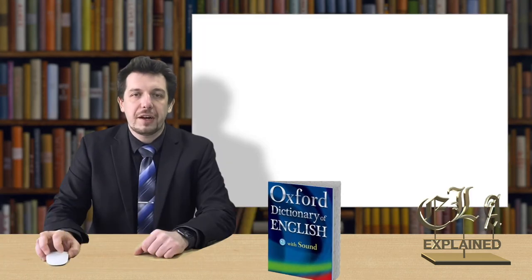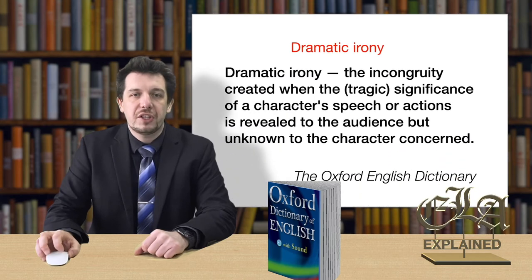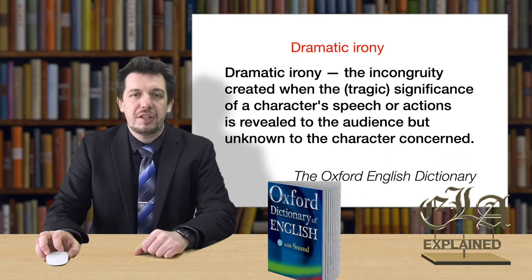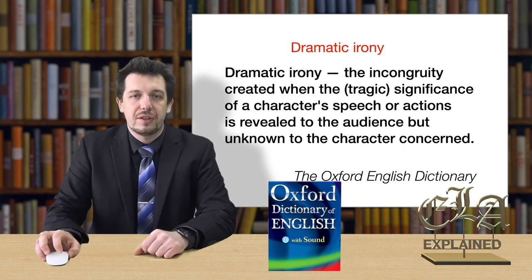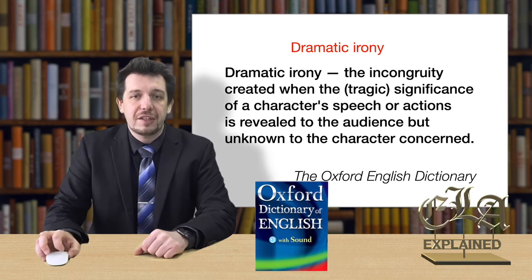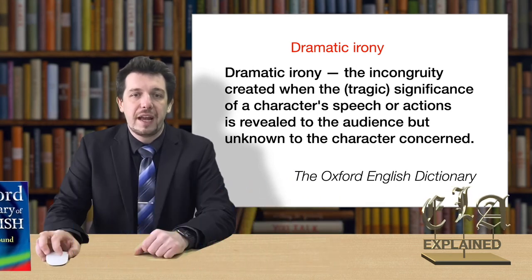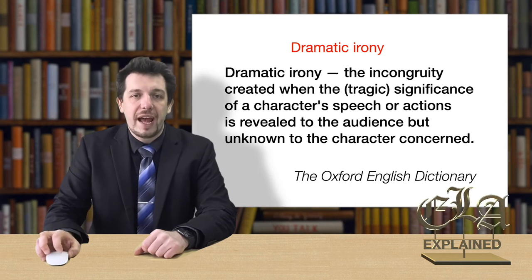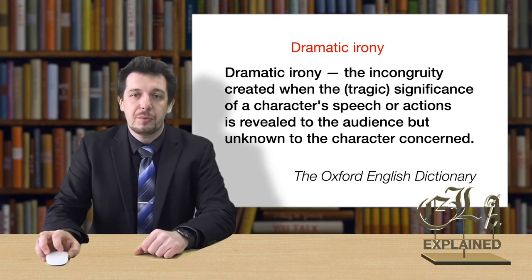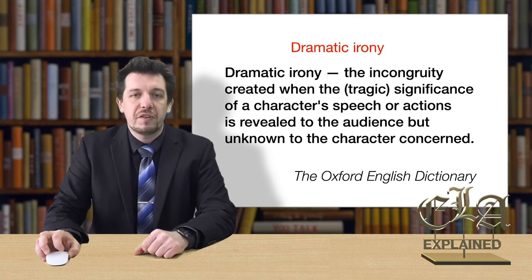Dramatic irony appears when the audience knows more about a situation than a character does. Based on this knowledge, the audience expects an outcome different from that expected by the character, and this knowledge adds a different meaning to the character's actions and words. This kind of irony can often be found in tragedies, and it is then called tragic irony.